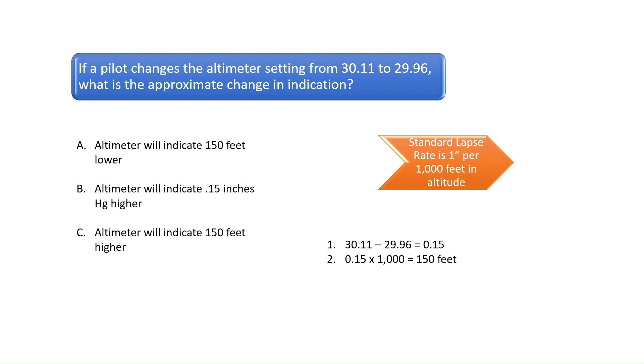Since the altimeter is being adjusted from a higher to lower pressure setting, the altimeter will indicate 150 feet lower. Another way to look at this is if the altimeter was not adjusted and our airplane was flown from the higher to lower pressure, then the aircraft would be 150 feet lower than the altimeter was indicating. The correct answer is A.